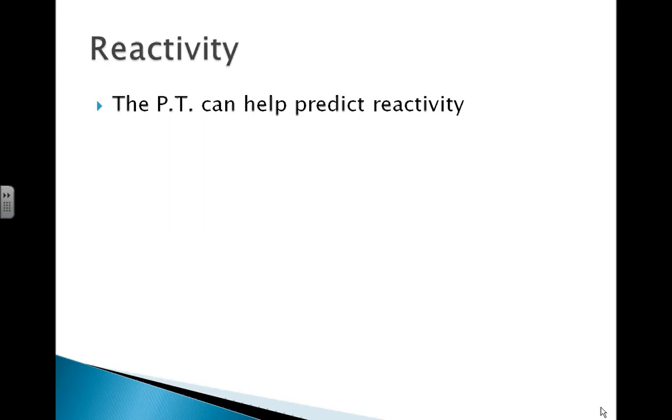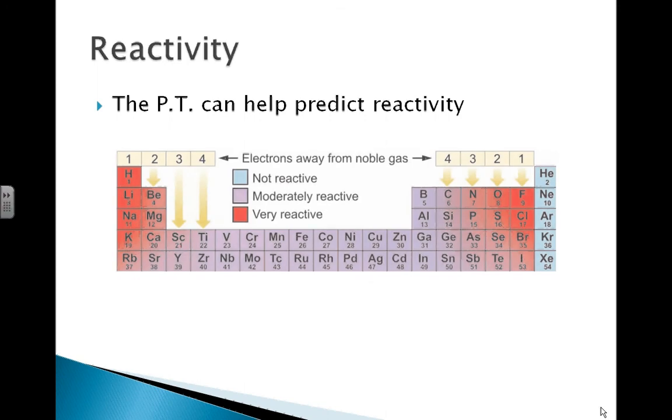And the last group, all the way on the right side, is not reactive. Well, we can actually use the periodic table to help predict reactivity, which is a good thing. Again, here we can see that first column is very reactive. The last column is non-reactive.